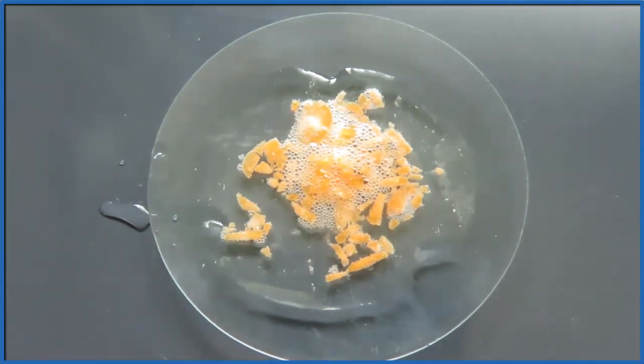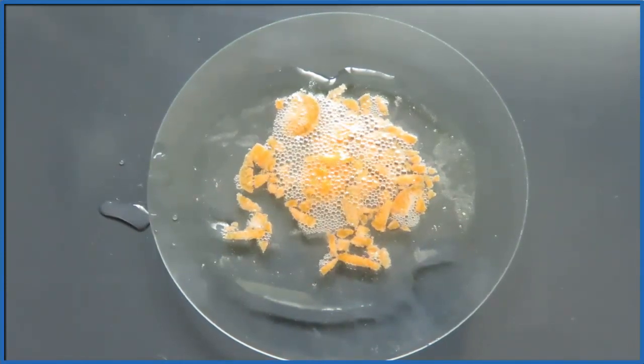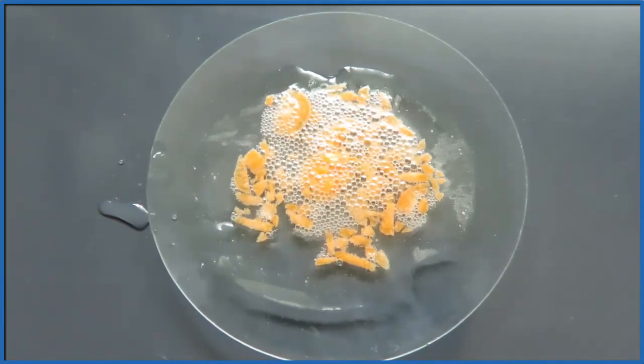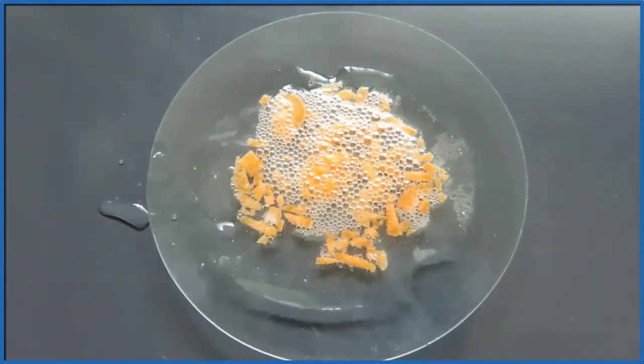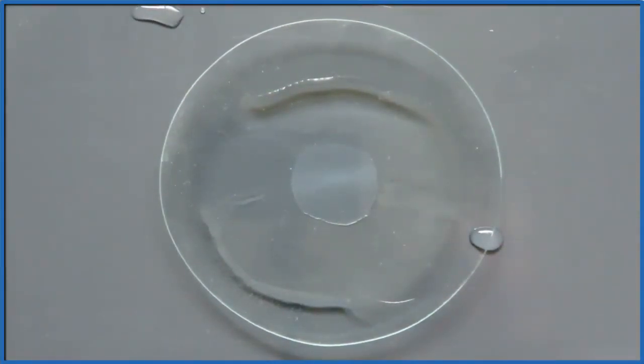So the catalase from the cells of the carrot that I damaged when I cut them, that is what's causing the decomposition of H2O2, and we see the oxygen gas. If we were to just put out some hydrogen peroxide in a watch glass, nothing would happen. It would just sit there for a while.